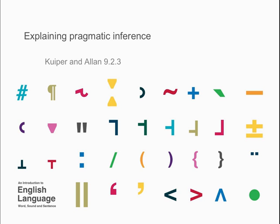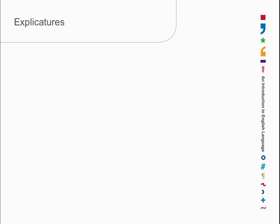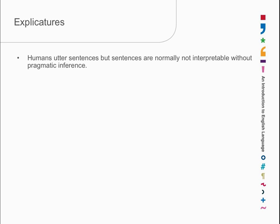Before we do that, there are a couple of other things we need to talk about. The first is that relevance theorists talk about propositions having explicatures. An explicature is a propositional content that can receive truth-conditional interpretation. Normally, sentences are not interpretable without pragmatic inference — there's too much missing, as we've already seen.